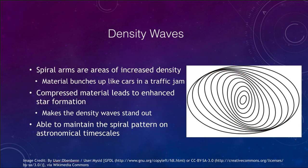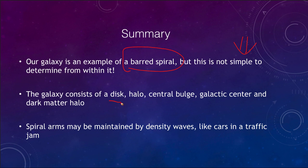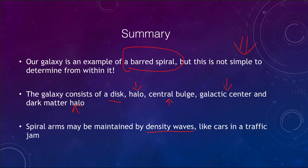In summary, our galaxy is an example of what we call a barred spiral galaxy, meaning it has a bar going through its center. This is not simple to determine because we are stuck inside it; when we look at other galaxies we can easily see whether they are ordinary spirals, barred spirals, or other types. The composition of our galaxy contains the disk, halo, central bulge, the galactic center, and a dark matter halo outside that. We believe that spiral arms can be maintained by density waves, which bunch up the material much like cars within a traffic jam. That concludes this lecture on the structure of our galaxy — we'll be back next time for another topic in astronomy.